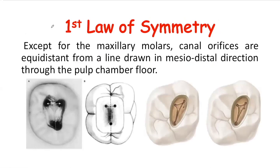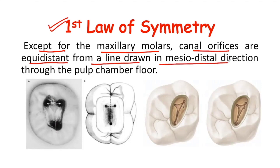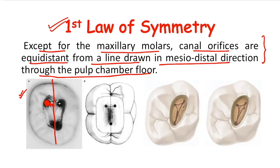Looking at the laws of symmetry, there are two laws. The first law of symmetry says that except for maxillary molars, the canal orifices are equidistant from a line drawn in the mesiodistal direction through the pulp chamber floor. So in the mandibular molar, if one canal orifice is located at a certain distance from this line, then the other orifice will be located equidistant from the same line.